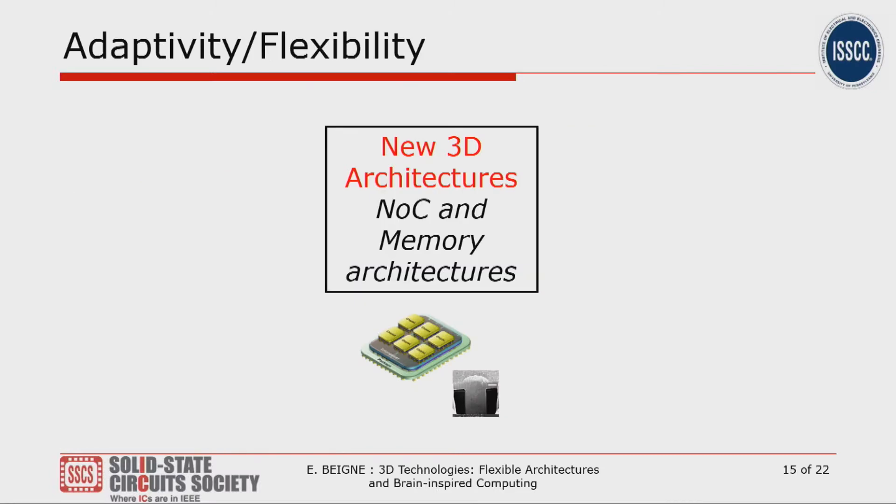To summarize the 3D architectures section: flexibility and partitioning differ according to the interconnection density. The key message is to think 3D before designing an architecture — a 3D architecture is not a 2D design simply brought into 3D. The more interconnections and reconfiguration between interconnections you have, the more flexibility and adaptivity the 3D architecture will provide.